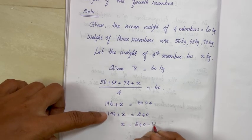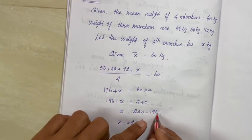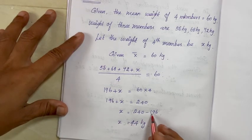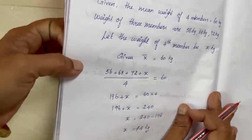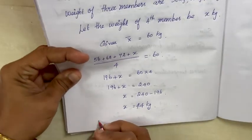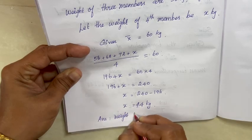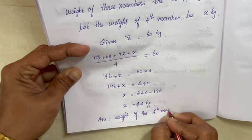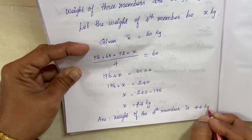Therefore x equals 240 minus 196, so x equals 44 kg. The 4th member's weight is 44 kg. The question asked to find the weight of the 4th member: the answer is 44 kg.